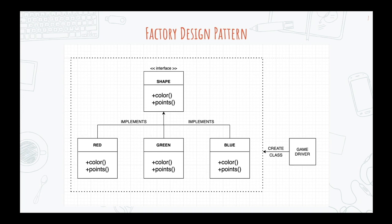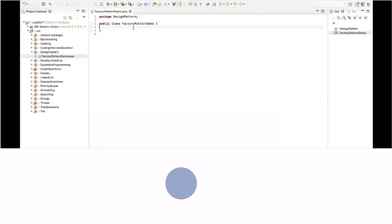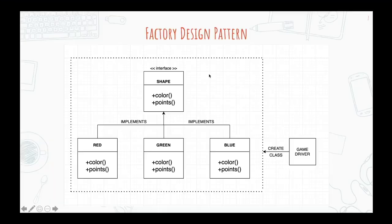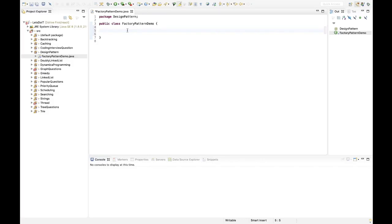Hopefully this makes sense and you've understood the design logic behind the factory design pattern. Let's go to the Java code implementation, because the interviewer will definitely ask you to write the code. Without a proper code example it doesn't make sense whether you've really understood the concept. Let's create a class called 'FactoryPatternDemo'. The first thing to create is the Shape interface, which will be the template for all subclasses. Within the Shape interface we'll create two abstract methods: 'getPoint' and 'getColor'.